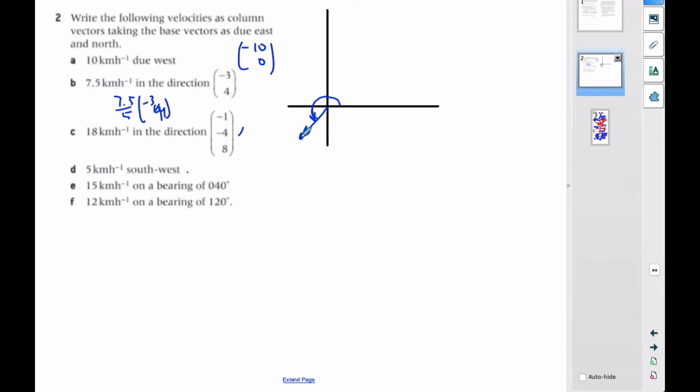This point here on the unit circle, so this has a length of 1, is simply cosine of 215 degrees, sine of 215 degrees. Because that's what this is, and so this length is 1, and the angle is 215 if I'm going southwest.